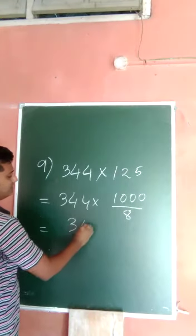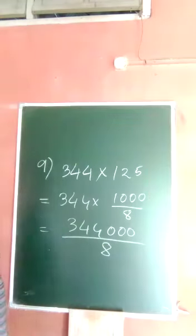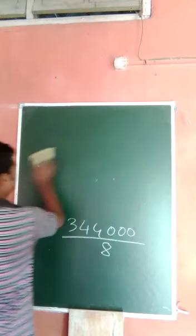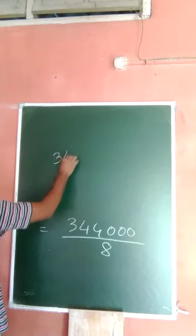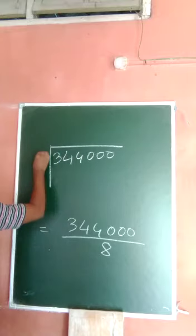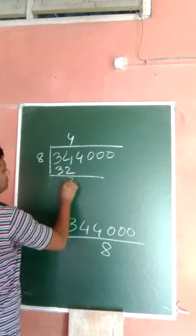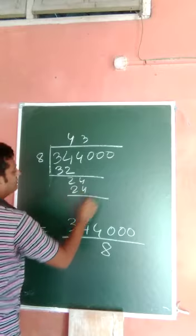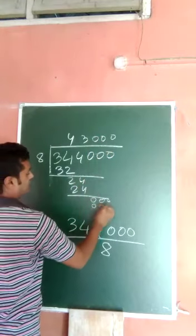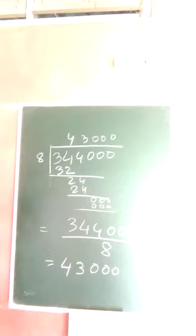So now 344, 125, this one is 8. Okay, so now we have to do that, again, division. So 344, 3440 divided by 8. So 8 fours are 32, 224, 8 threes are 24, and triple 0. So 1, 2, 3. Okay, that means 43000.